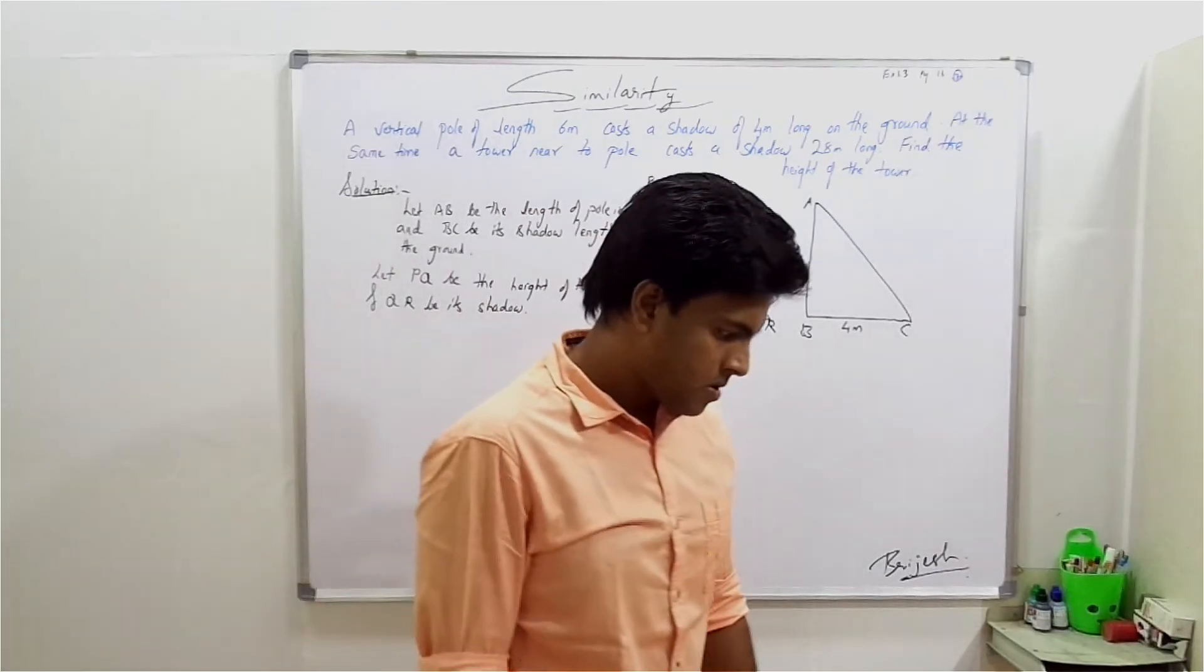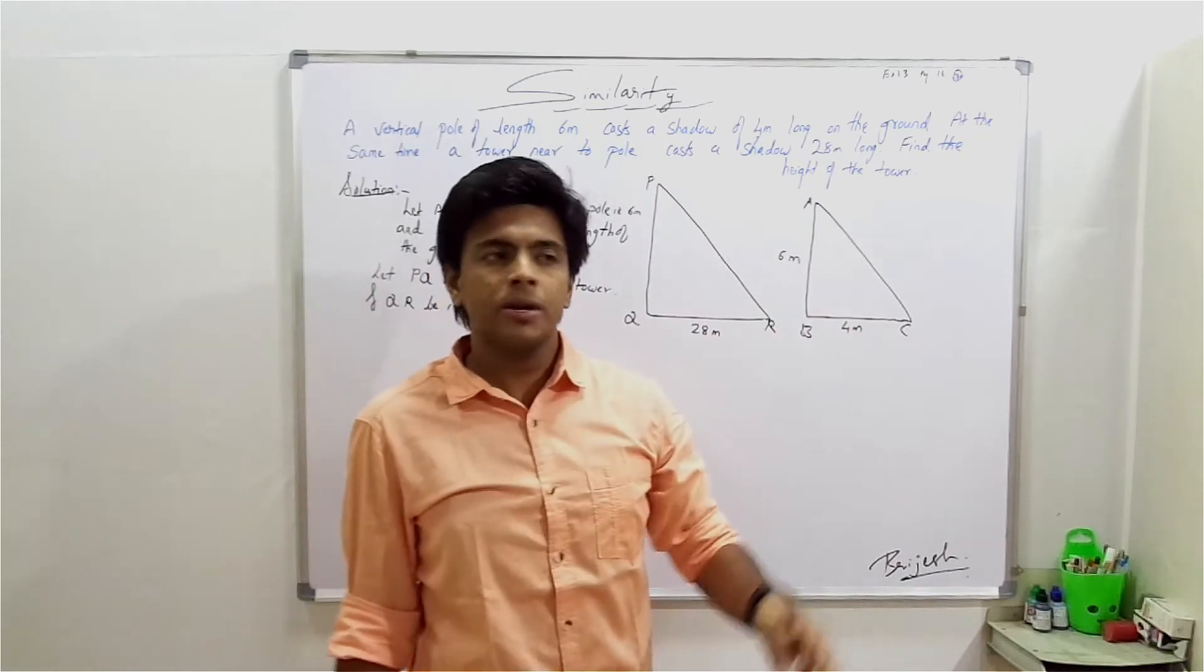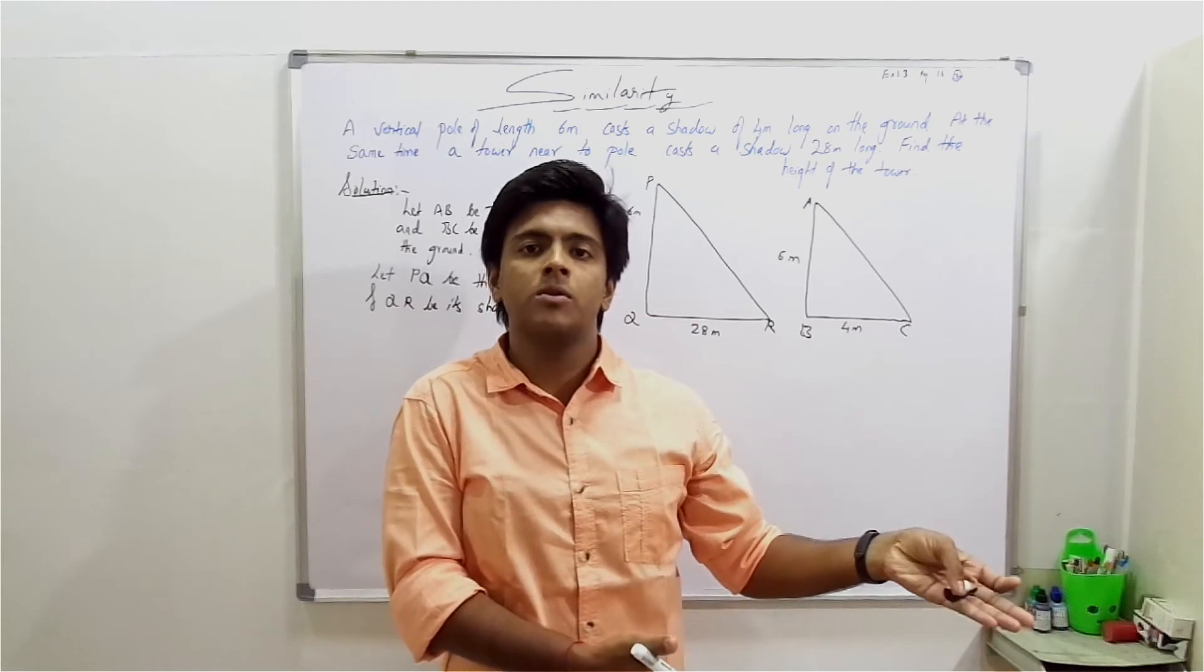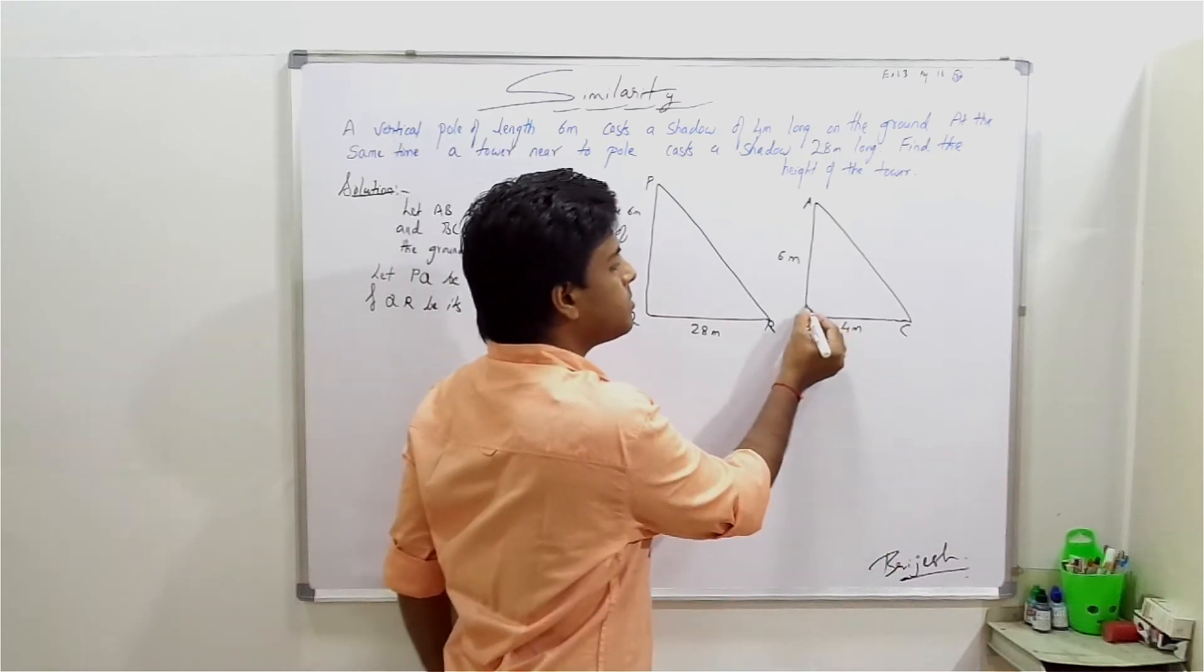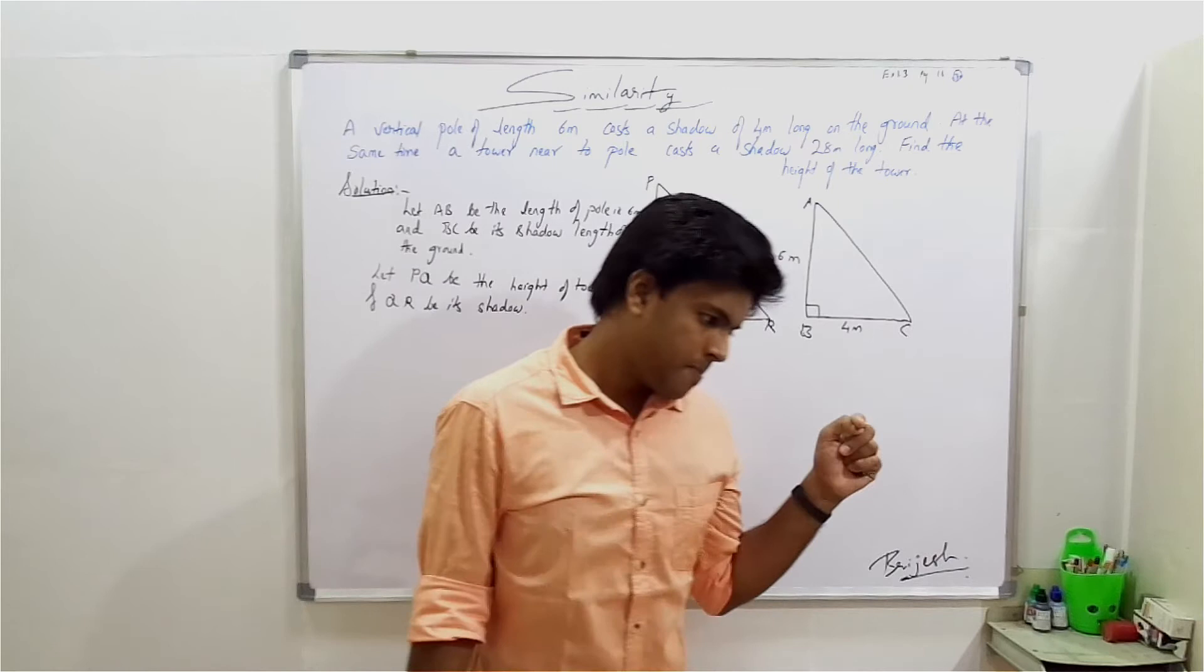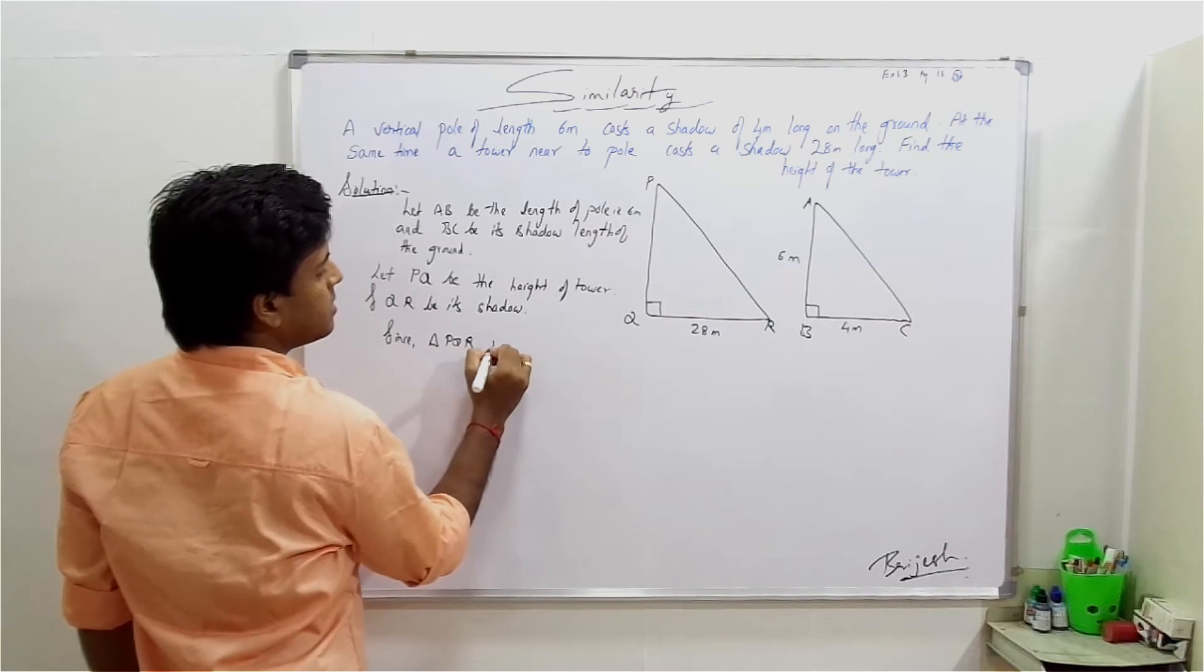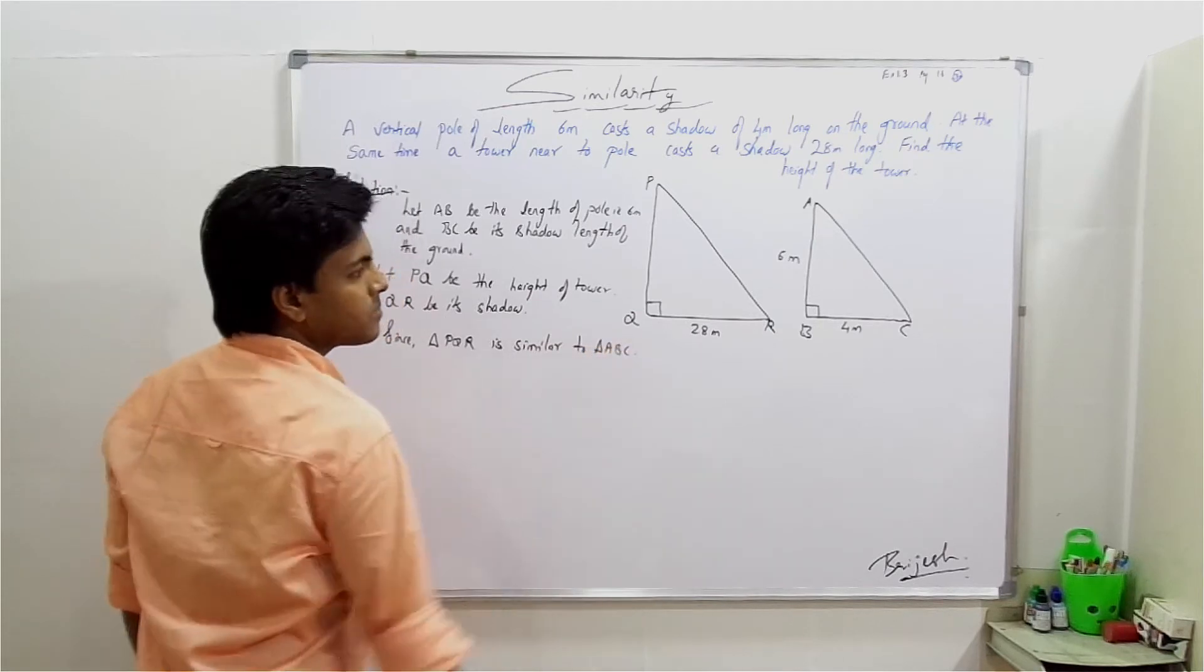The pole is perpendicular and the tower is also perpendicular, so the triangles are similar. Since triangle PQR is similar to triangle ABC.